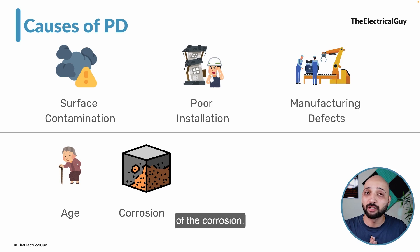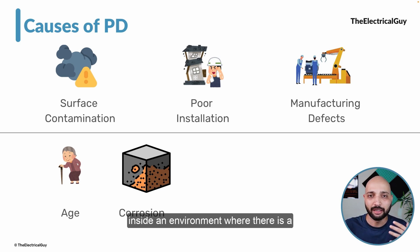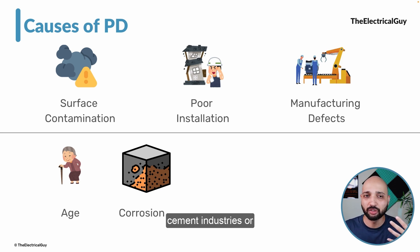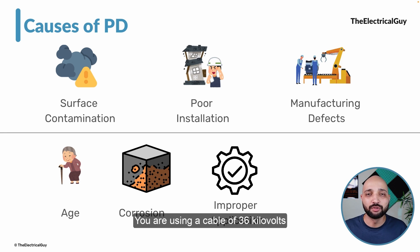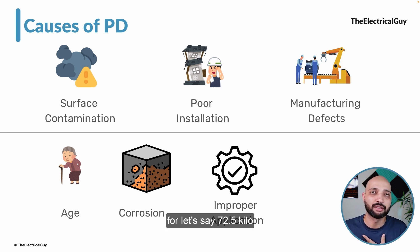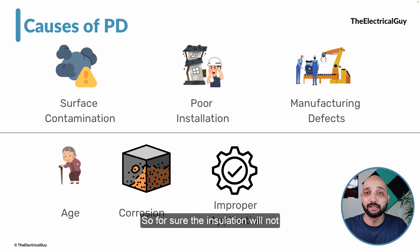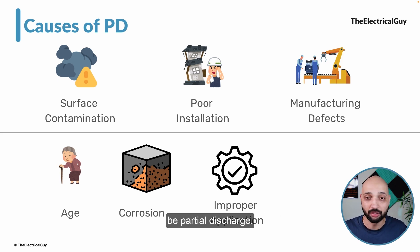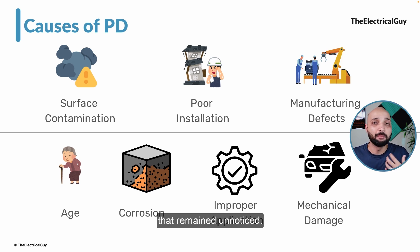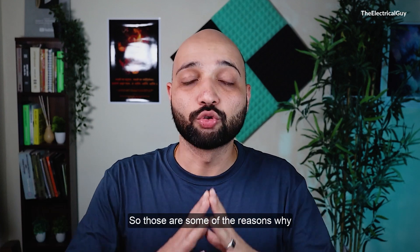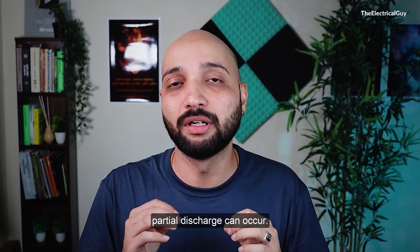Corrosion is another cause — equipment installed in corrosive environments such as near the seashore or in cement industries can develop PD. Improper application is also a cause: for example, using a cable rated for 36 kV in a 72.5 kV application means the insulation will not sustain the voltage and partial discharge will occur. Finally, mechanical damage during installation or maintenance that goes unnoticed can ultimately lead to partial discharge.